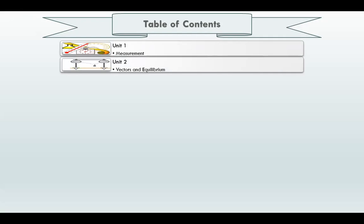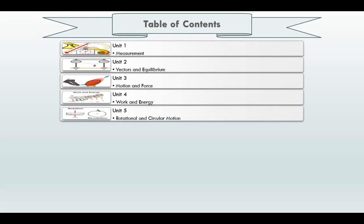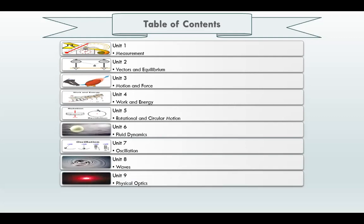There are ten units in this book. Unit one is Measurement, unit two is Vectors and Equilibrium, unit three is Motion and Force, unit four is Work and Energy, unit five is Rotational and Circular Motion, and unit six is Fluid Dynamics.